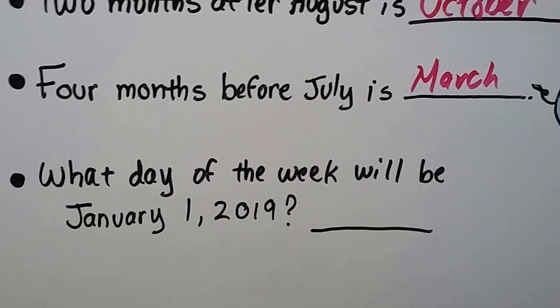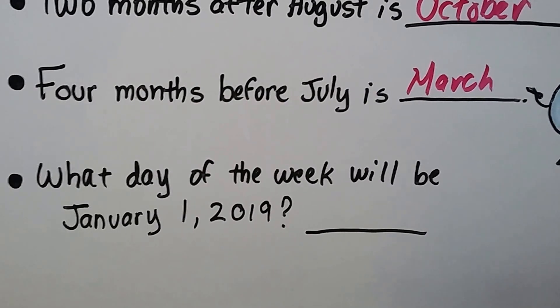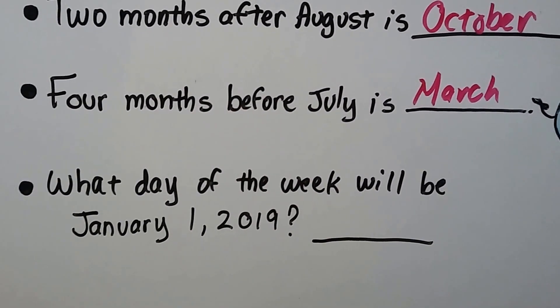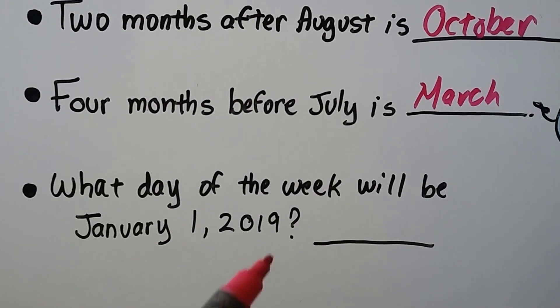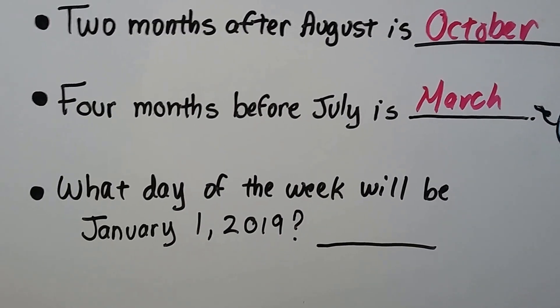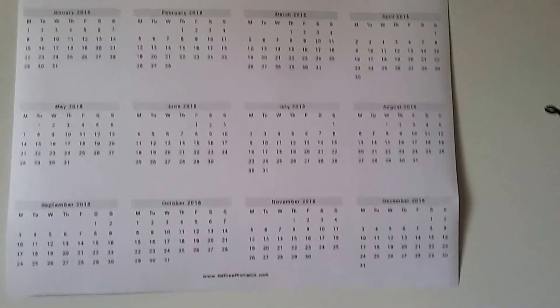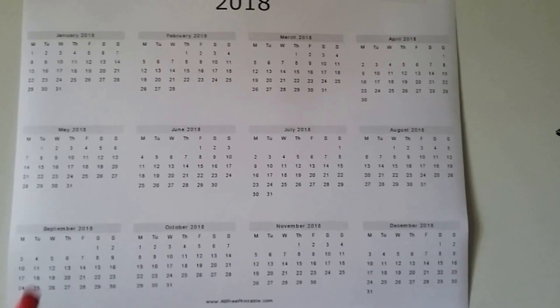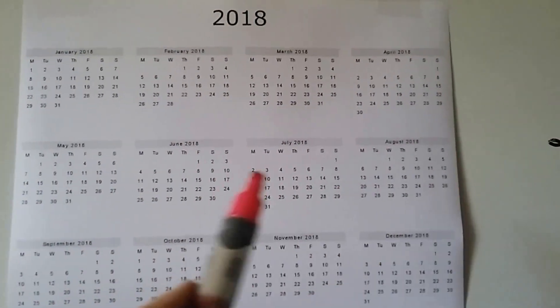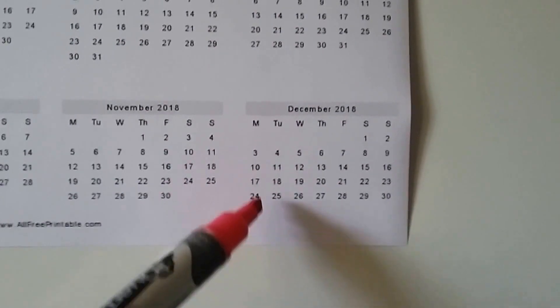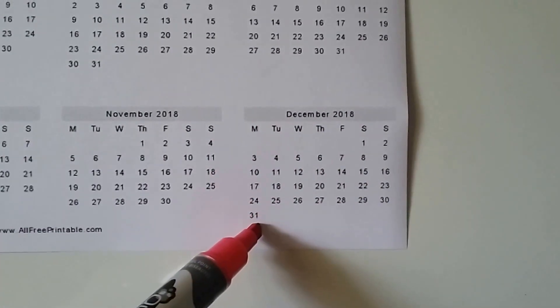So let's look at this yearly calendar and find out what day of the week will be January 1st of 2019 — that's the next year after 2018. We look at the last day of 2018, which would be December 31st. That says it's a Monday.